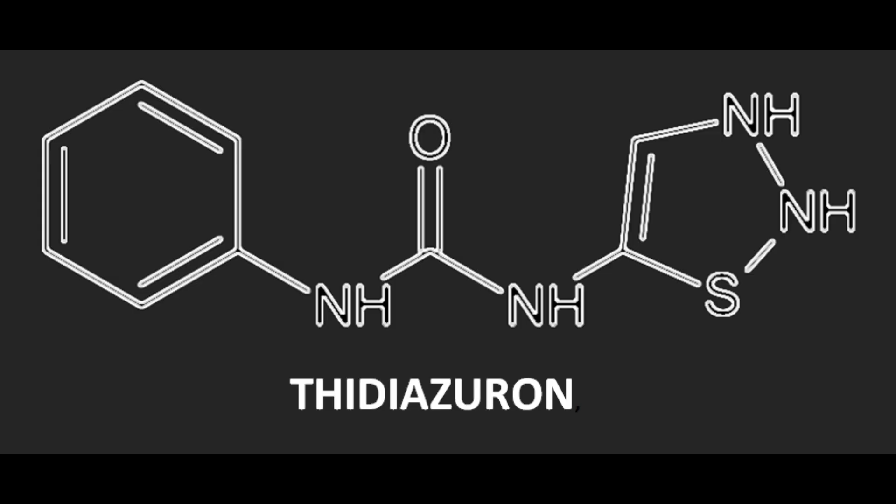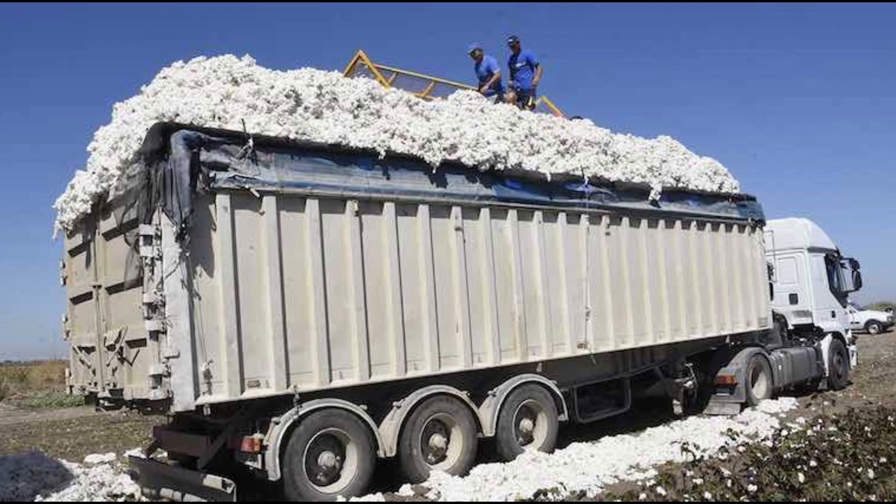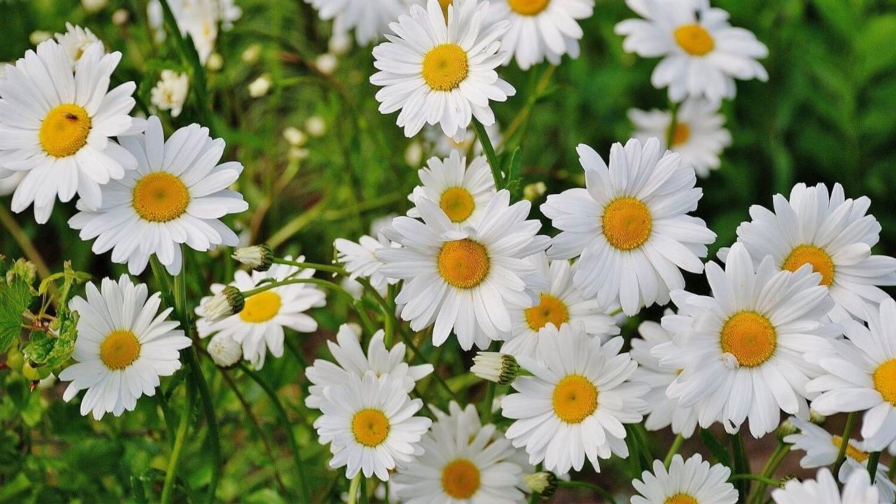Derivatives of diphenylurea are used as synthetic hormones called cytokinins, such as thidiazuron, which are used to eliminate the leaves of the cotton plant and facilitate its harvesting. They also encourage flower growth.